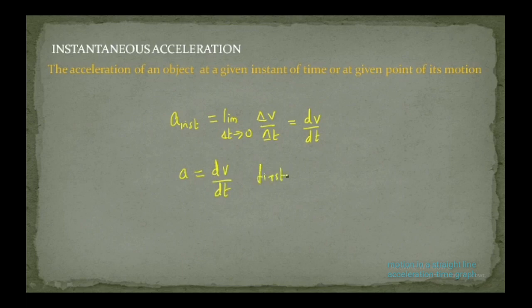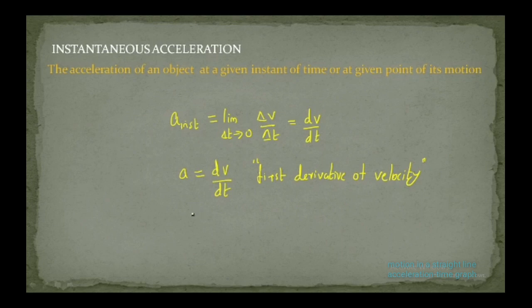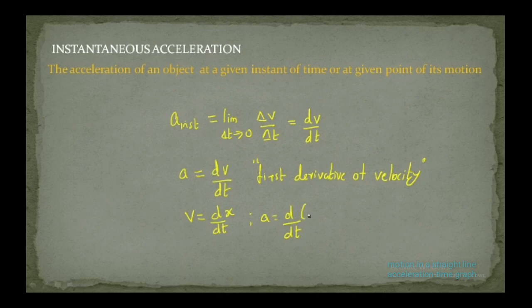This is called the first derivative of velocity, and the first derivative of velocity is called acceleration. We already know that velocity equals dx/dt, which is the first derivative of displacement. Substituting v into the expression for instantaneous acceleration gives d/dt of (dx/dt), which can be written mathematically as d²x divided by dt².